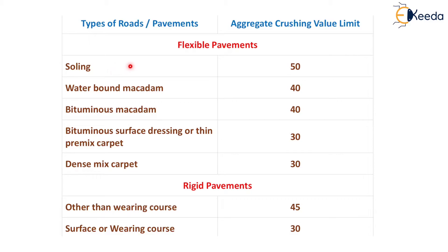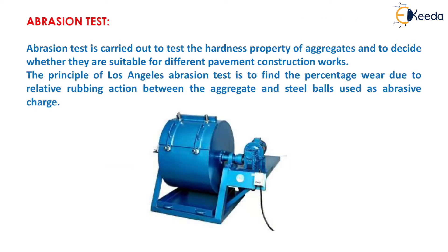Permissible aggregate crushing values: for soling, the value shall be 50; for water bound macadam, 40; for bituminous macadam, 40; for bituminous surface dressing or thin premix carpet, 30; for dense mix carpet, 30; for rigid pavement other than wearing course, 45; and for surface or wearing course, 30. The next test is the Abrasion Test.